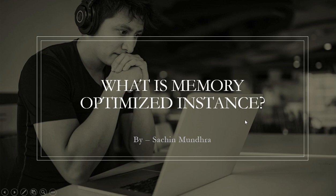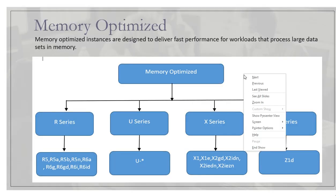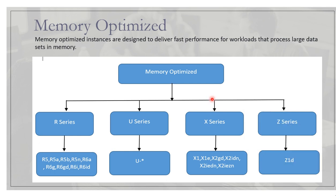In this episode we will see what is the memory type for memory optimized instances. Memory optimized is one of the seven instance types Amazon EC2 has provided. Memory optimized instances are designed to deliver fast performance for workloads that process large data sets in memory.